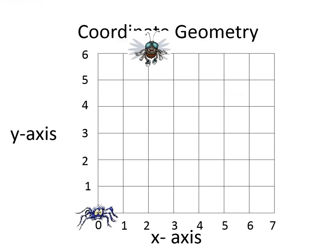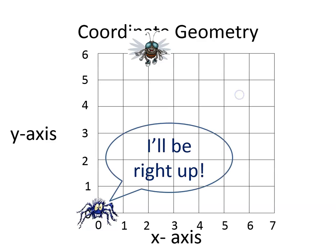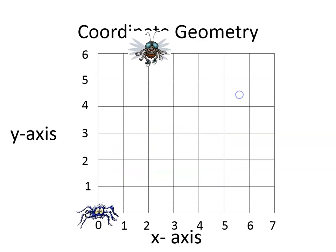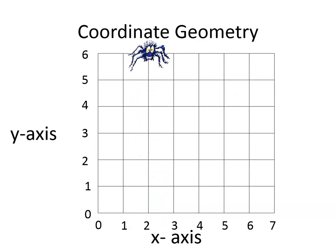There's the fly and there's the spider. He says 'I'll be right up,' so he goes to the right and he goes up, and he ends up at the point two comma six.